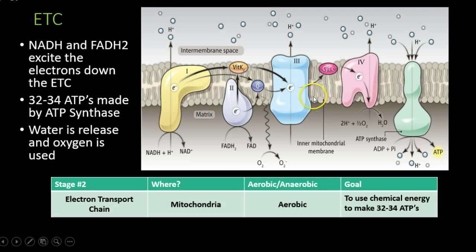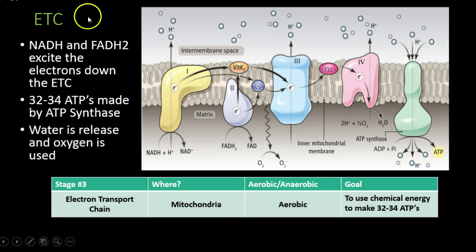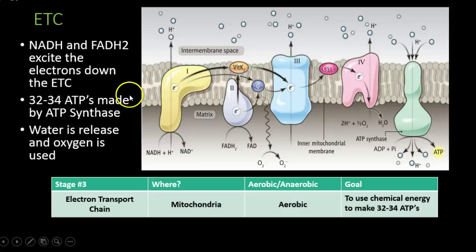ATP synthase is the same protein we have in plants — it performs the same function: it converts ADP into ATP. Let's compare the electron transport chain in the mitochondrion to the one in photosynthesis. The biggest difference is we don't have photosystems in the mitochondrion ETC. We are not harvesting light; we are breaking down a sugar and trying to get as much ATP as possible. So instead of light energy, NADH and FADH2 excite the electrons down the electron transport chain.